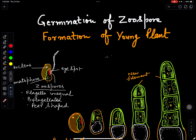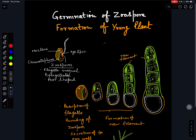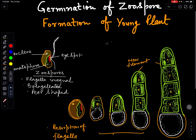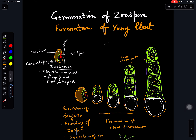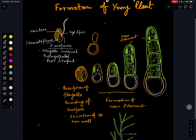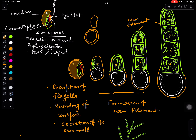Now we will discuss how these zoospores germinate and how they develop into young plants or form the thallus of Ectocarpus. The zoospore has a nucleus, a red eyespot or stigma which senses light, a chromatophore containing pigments, and a pair of flagella — it is pear-shaped. When it is going to germinate, the zoospore will round off and develop a wall.